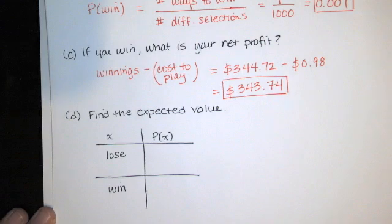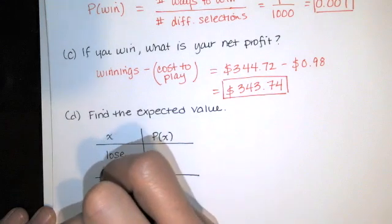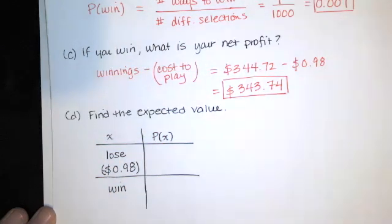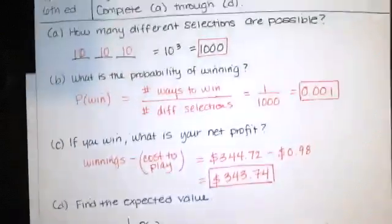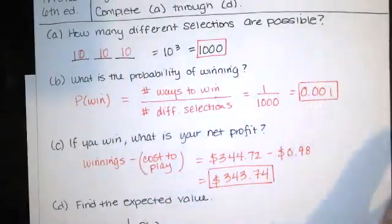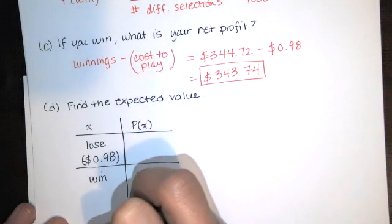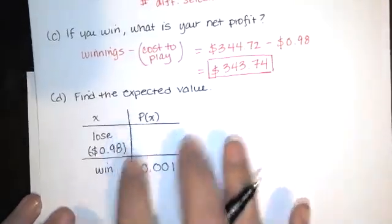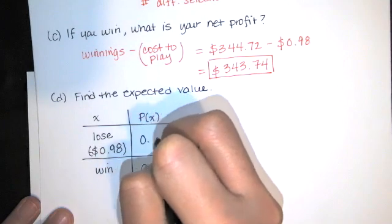Now, if you lose, the value that you stand to lose is that 98 cents. So we'll have negative 0.98 right here. Now, the probability of losing that 98 cents is one minus the probability of winning. We already said that the probability of winning was one in 1,000 or one one-thousandth. So the probability of losing is 999 out of 1,000 or 0.999.